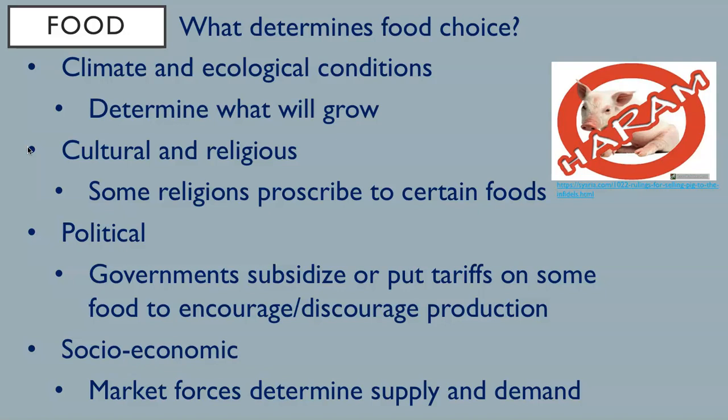Political influences also determine food choice. Governments subsidize or put tariffs on some food to encourage or discourage production of certain foods. Socioeconomic influences matter too — market forces determine supply and demand in a free market economy. For example, a short supply of almonds or beans will result in higher prices. But if supply increases by more farmers growing the crops, then the prices fall and farmers stop growing it. But we all need food to survive, so let's look at food production around the world.